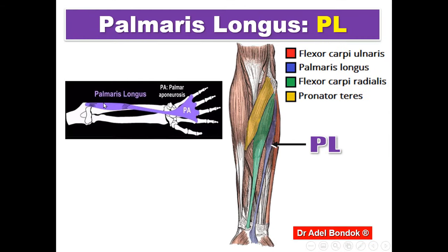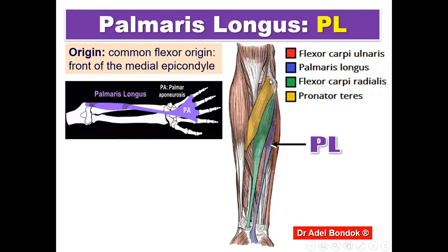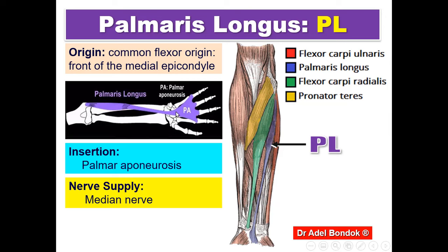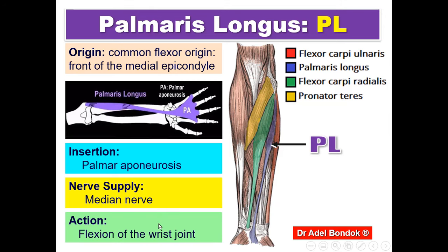Palmaris longus: origin from the common flexor origin, front of the medial epicondyle. Insertion into the palmar aponeurosis. Nerve supply: the median nerve. Action: flexion of the wrist joint. It may be absent.